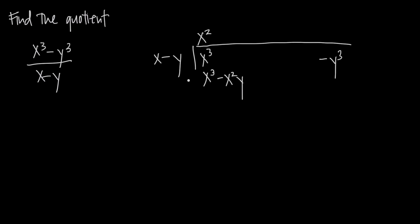As always, we're going to subtract our result — we want to subtract x cubed minus x squared y from x cubed. However, we're going to need an x squared y term and we don't have one; we only have this negative y cubed. We can't subtract negative x squared y from negative y cubed because they're not like terms. So we'll go ahead and add in a zero x squared y.